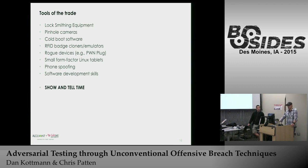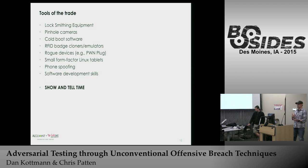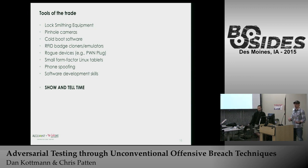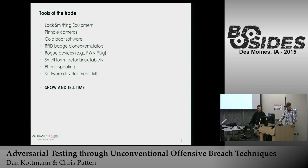We also use RFID badge cloners and emulators — a DIY Kickstarter project called the RFIDler that allows us to clone a vast majority of proximity cards. If we find badges on employees or laying around, we can clone them and come back later to gain building access. For mobility, we use Nexus 7 tablets running Kali NetHunter — a full-blown version of Linux in a small form factor — with micro USB Ethernet adapters, so we're not lugging around MacBooks.